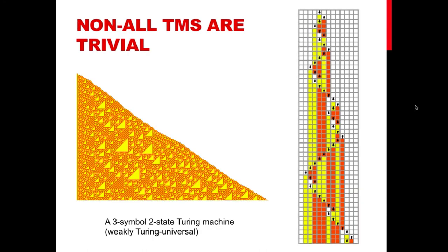The previous Turing Machines were quite simple, but not all of them are the same. This is an example of a much more sophisticated one, even when it has only three symbols or colors, in this case, and two states.